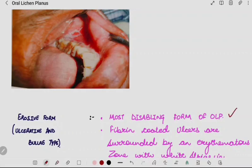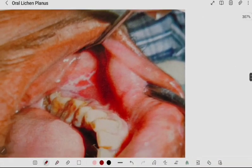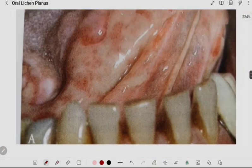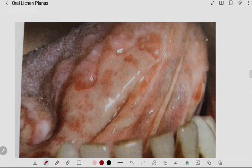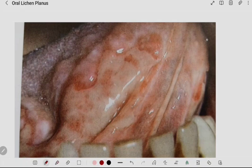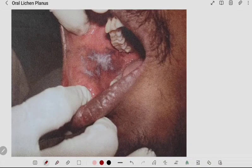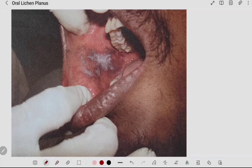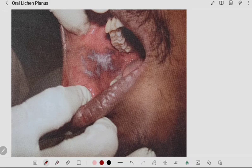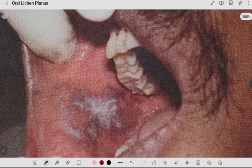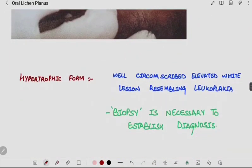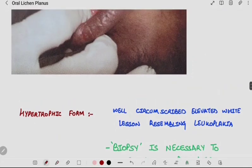The most disabling form is erosive, in which white striations are at the periphery. This is how you differentiate between atrophic and erosive type. Here you can see buccal mucosa affected by erosive type and also the tongue with huge ulcers which are very painful and irregular in size and shape. The last one is hypertrophic form, which is elevated white lesion. You cannot differentiate this from leukoplakia; it resembles leukoplakia. We need to do biopsy to establish diagnosis in the hypertrophic form.